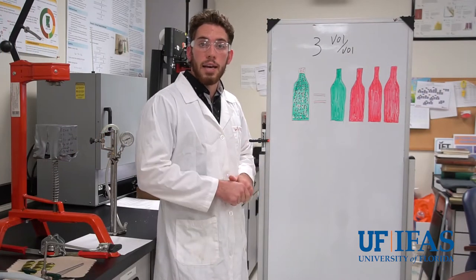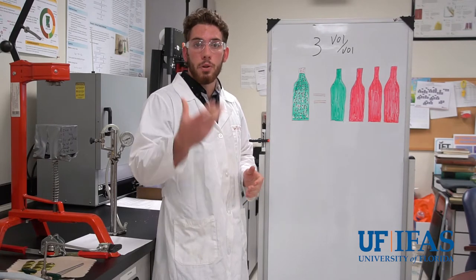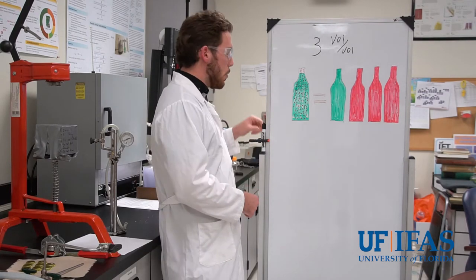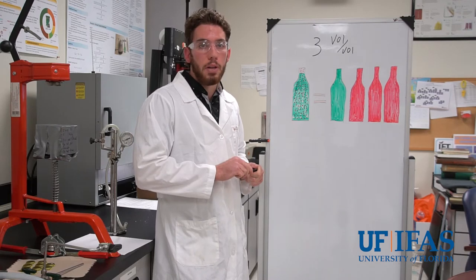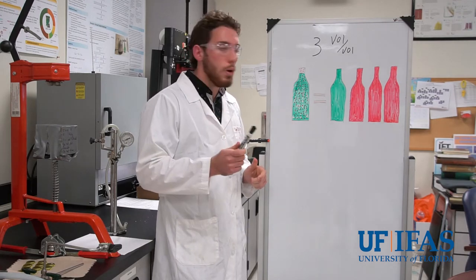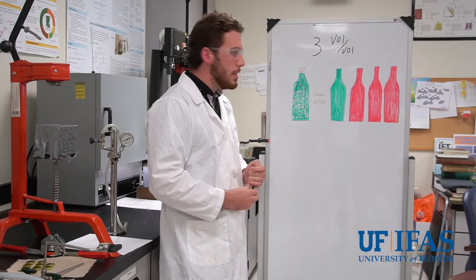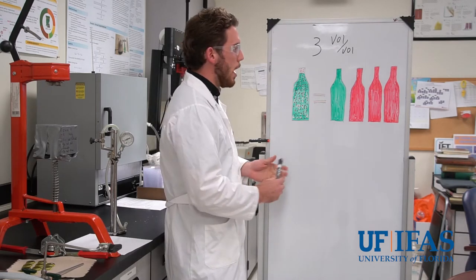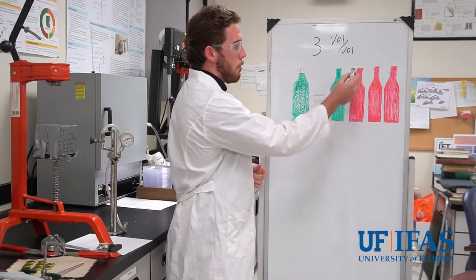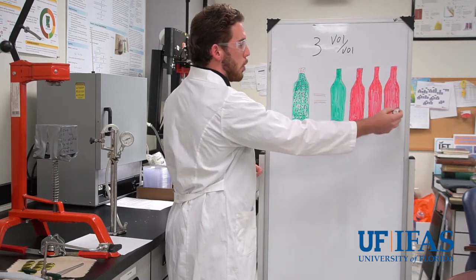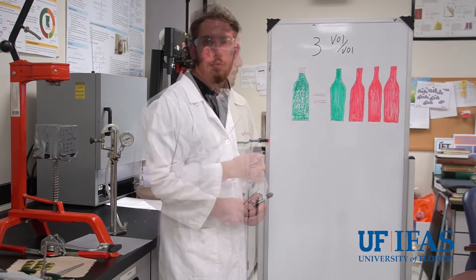One of the first parameters that I look at in the Excel spreadsheet is what volume per volume that we want to carbonate to. Today we are carbonating to three volume per volume, which means that for every one volume of liquid, there are three volumes of carbon dioxide infused into the liquid.